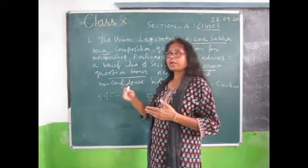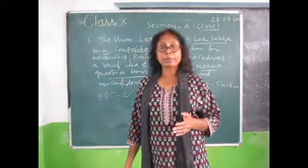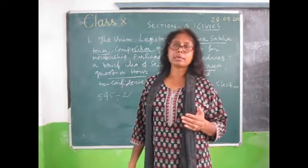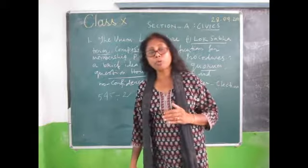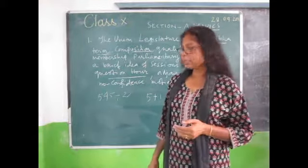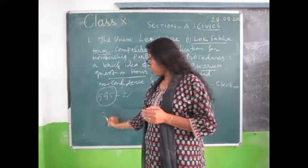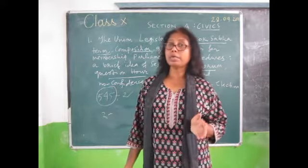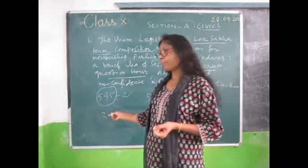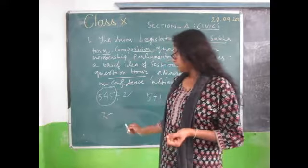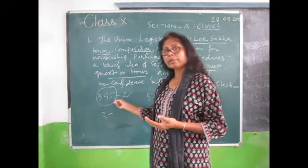Now, the composition of Lok Sabha. The Constitution clearly mentions that the total members shall not exceed 552. At present, the President can nominate two members from the Anglo-Indian community. This question has been asked many times - how many members can the President nominate and from which community? The answer is two members from the Anglo-Indian community. The rest are elected through adult franchise - those above the age of 18 can cast their vote.